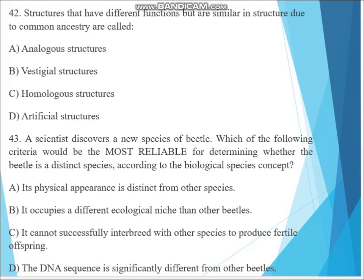Question 42. Structures that have different functions but are similar in structure due to common ancestors are called: A. Analogous structure, B. Vestigial structure, C. Homologous structure, D. Artificial structure. The answer must be C, homologous structure. Because homologous is the same origin and different functions, like human arm, whale's flipper, and so on.